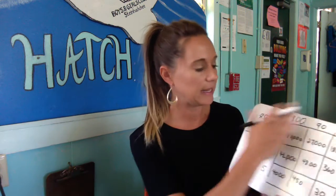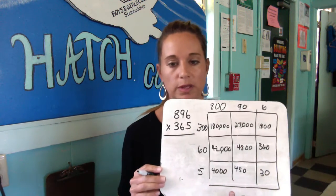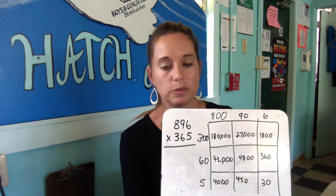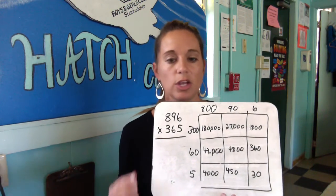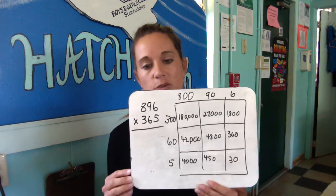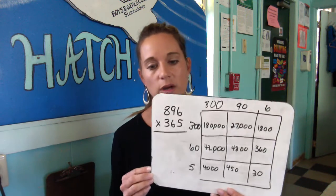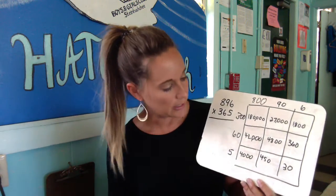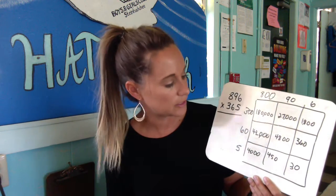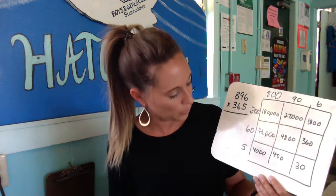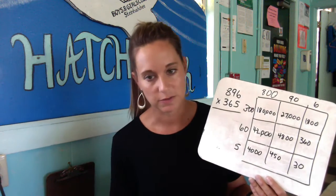You start with the largest number, which would be 180,000, then add 48,000, 27,000, and so on in order, and you finally get a final answer of 260,440 for that one.